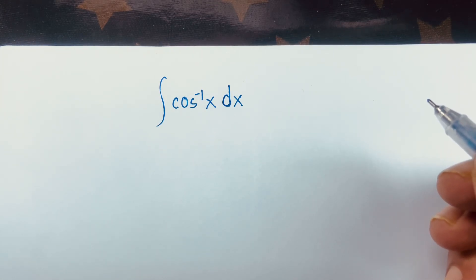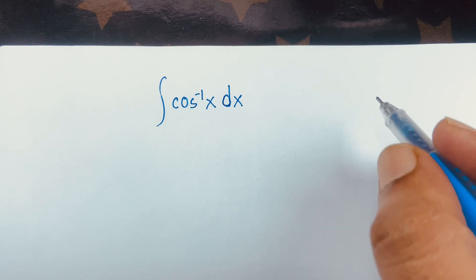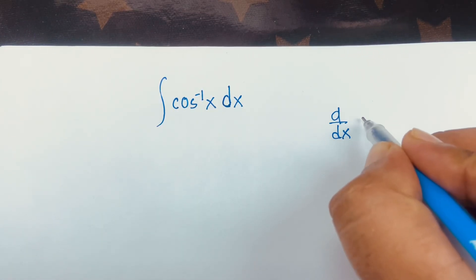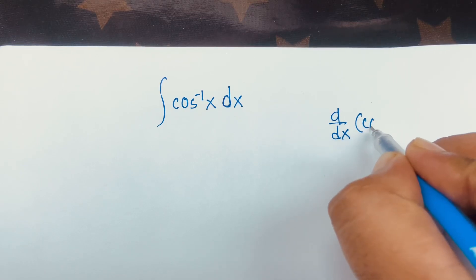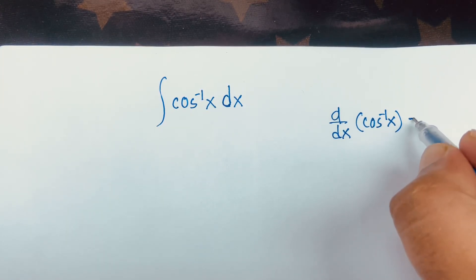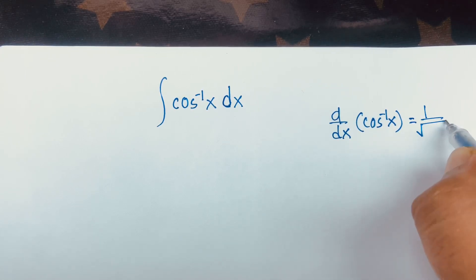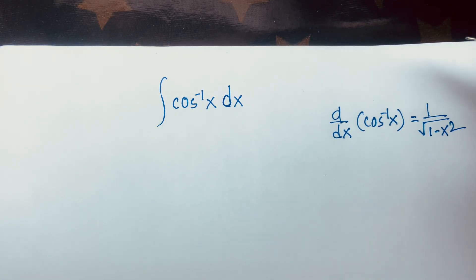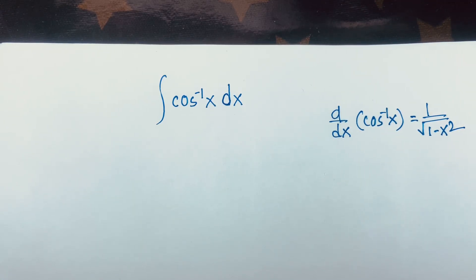But first of all, remember that we know the derivative of cosine inverse x — it will be 1 over square root of (1 minus x squared). But the integral of cosine inverse x dx is equal to what?